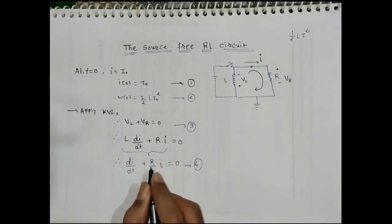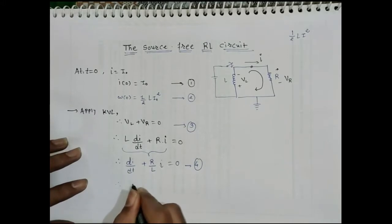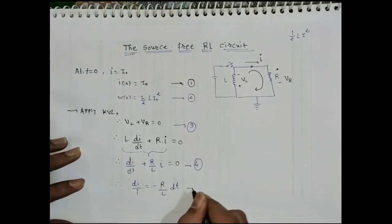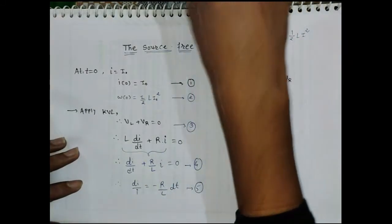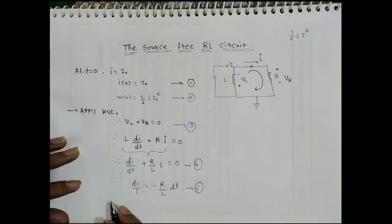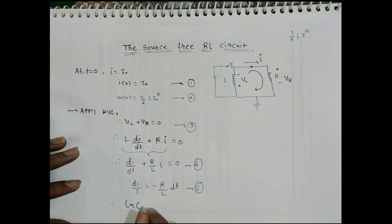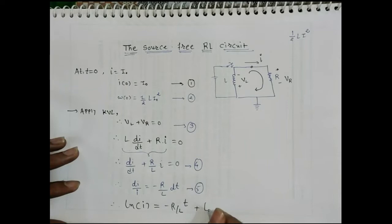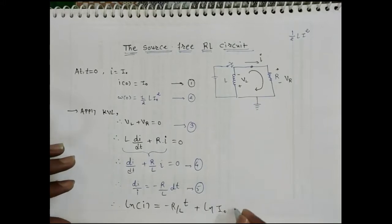Rearranging the equation, we can write dI/I = −(R/L) dt. Integrating both sides gives the natural logarithm of I equals −(R/L)t plus an integration constant. We can write this as ln(I/I₀) = −(R/L)t. This is equation number 6.